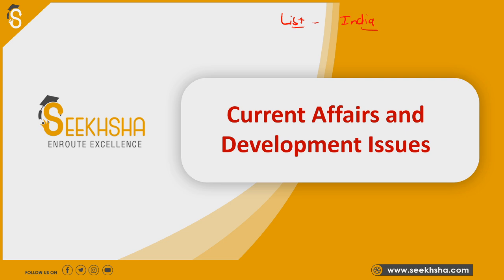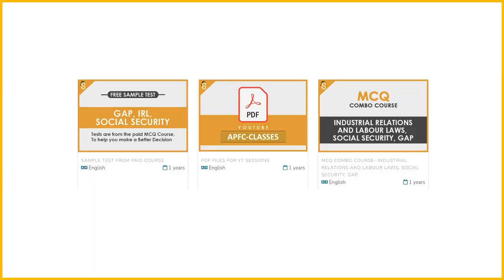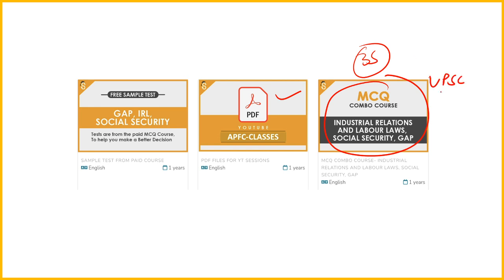Like the Human Development Index and rankings — this is our strategy so that we will cover everything by the end. PDF lecture links are in the description. You can take the subscription, and if you have the MCQs combo course, which is a very precious course for you, you can use the code UPSC-EPFO.